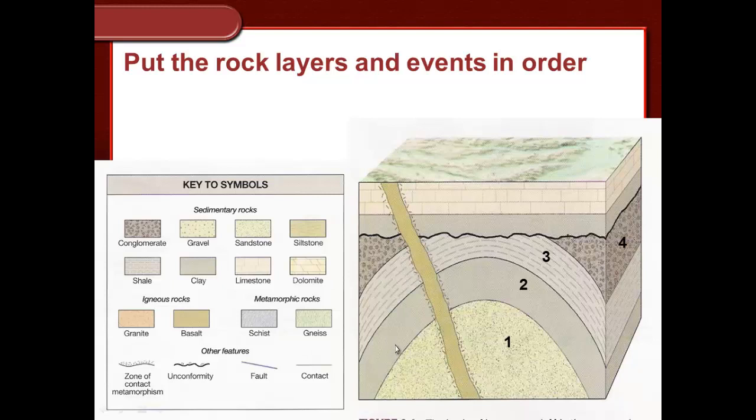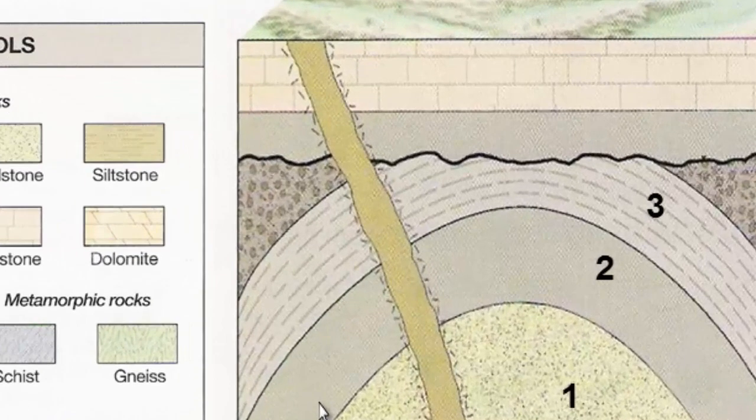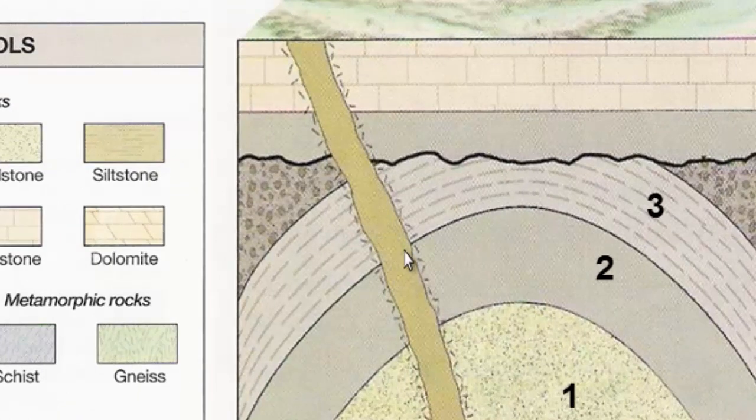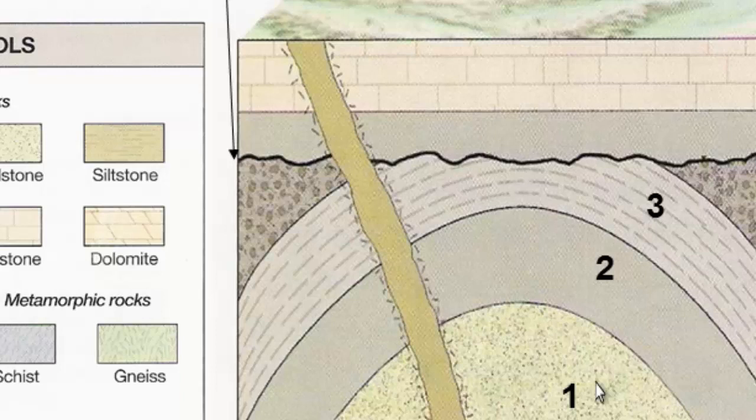Then the next question is: is this basalt, this igneous intrusion next, or is it this unconformity? The way that you could tell is right here. Notice that it's the igneous intrusion cutting across this unconformity. This is an angular unconformity because these layers are at an angle. In fact, the basalt is cutting across it, which means it's younger than this unconformity. So the unconformity happened first.